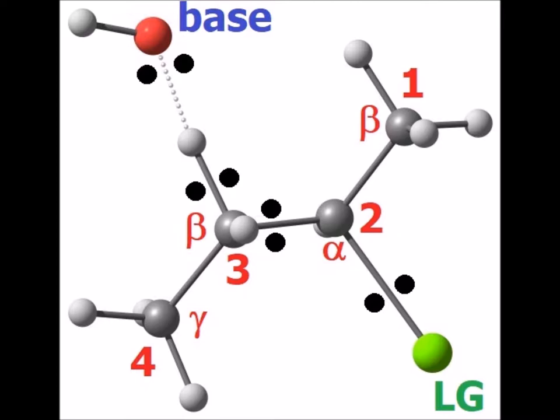Again, we have shown the important electron pairs involved in the reaction. The flow of electrons shows the bond forming between the base and the beta hydrogen. The movement of the bonding pair between carbon and hydrogen to increase the carbon-carbon single bond to a carbon-carbon double bond. And we see the lone pair leaving with the leaving group of chloride in this particular case.